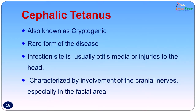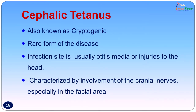Cephalic tetanus, also sometimes known as cryptogenic tetanus, is a rare form of the disease. The infection site is usually in the middle ear where anaerobic conditions allow tetanus spores to germinate, and injuries to the head can also lead to cephalic tetanus. It is characterized by involvement of the cranial nerves, specially in the facial area.